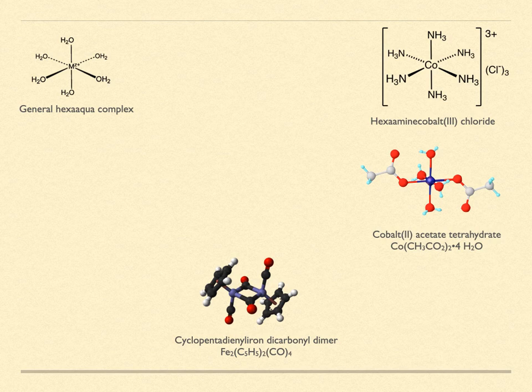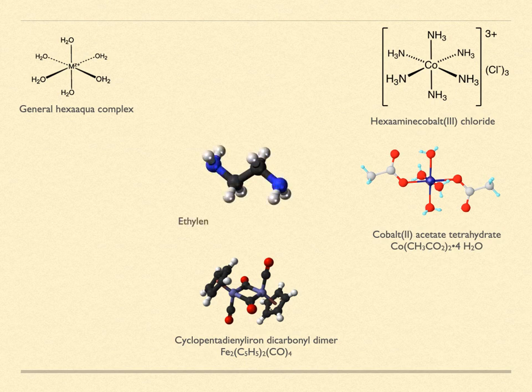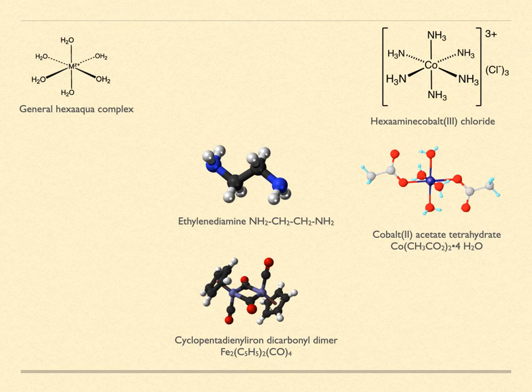A bidentate ligand is one that can form two bonds with a metal center. A typical example is ethylenediamine. It is usually abbreviated as EN when discussing complex ions. Note how it has two NH2 sites that are held at just the right distance by the ethylene structure. As with ammonia, the lone pair of electrons on the nitrogen can form a dative bond with a metal atom.